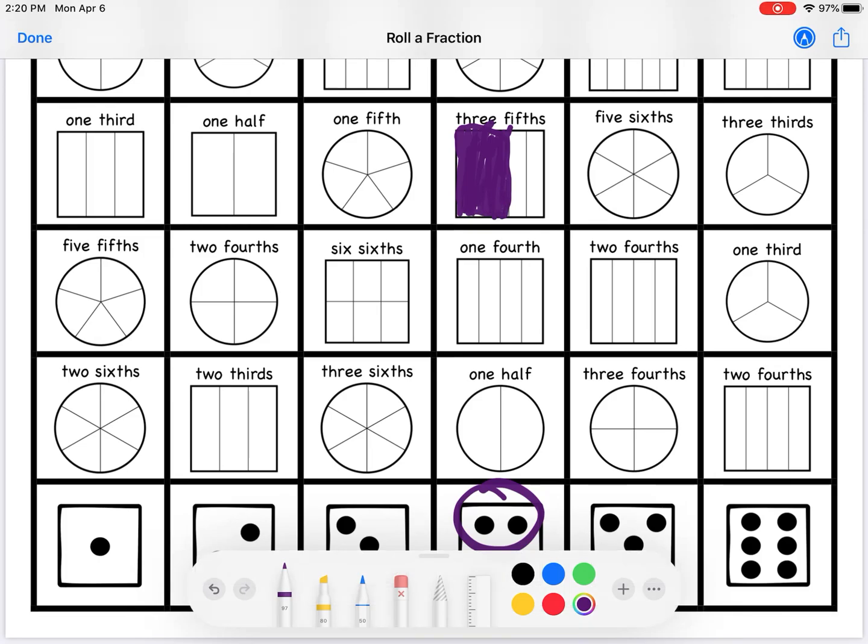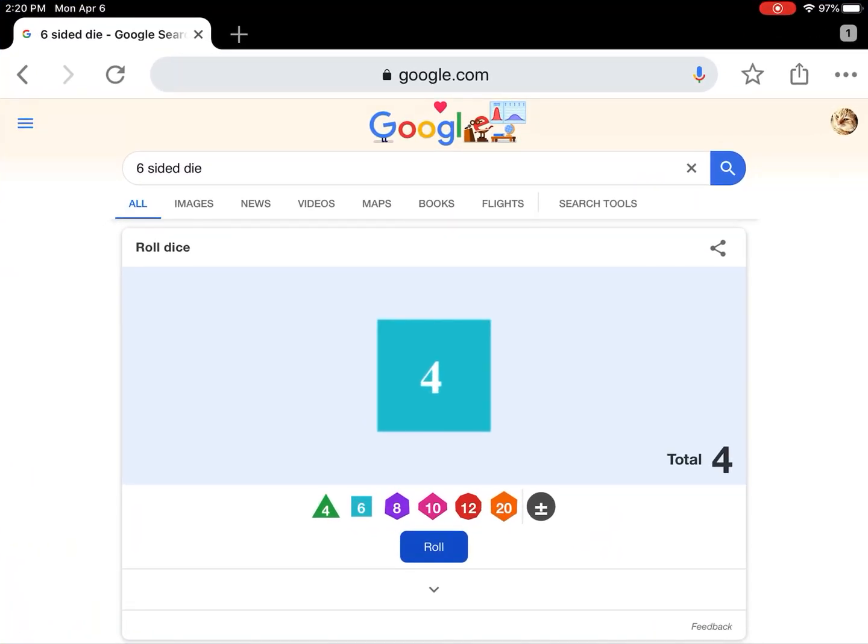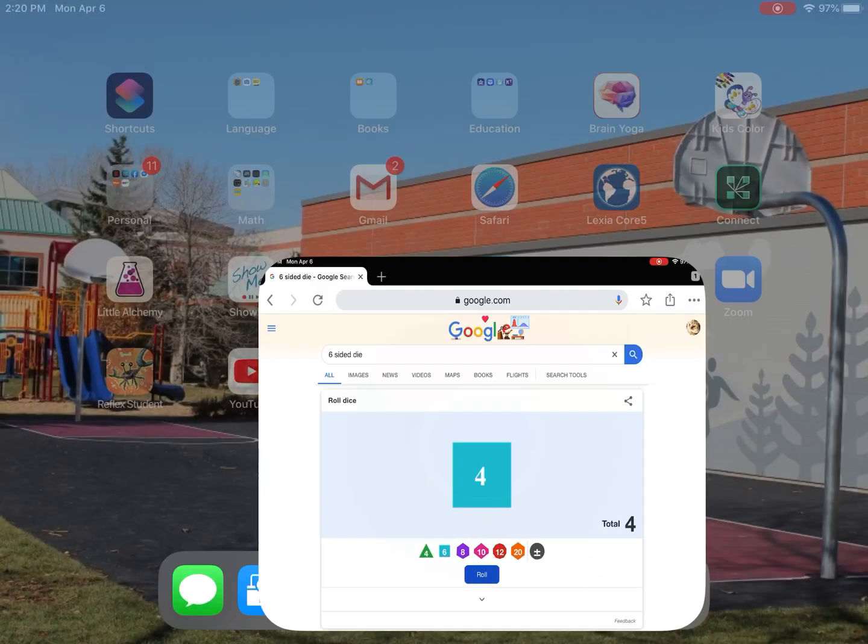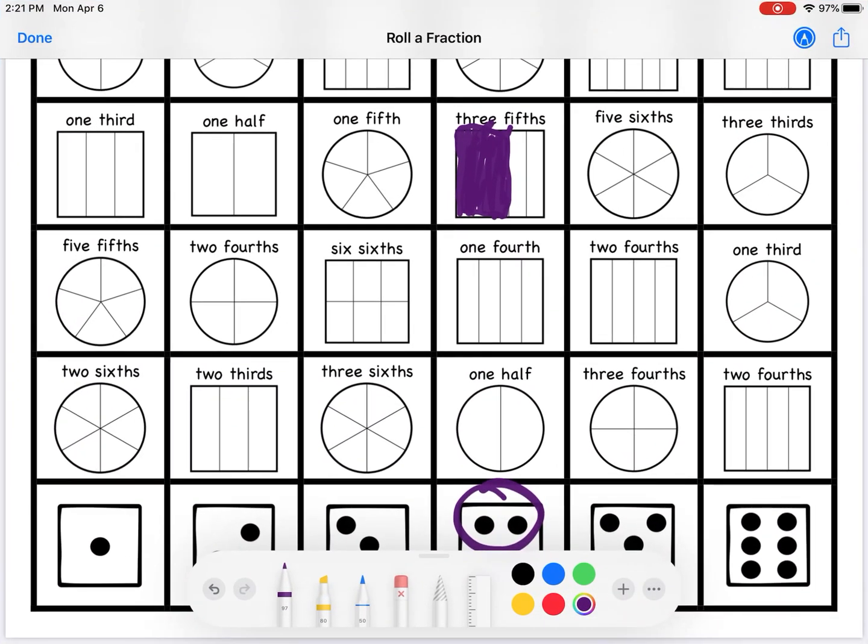Okay and now it's Kyle's turn so Kyle is going to roll the die. Okay and Kyle also got a four. So he is going to color something in the same column and he's gonna be blue.